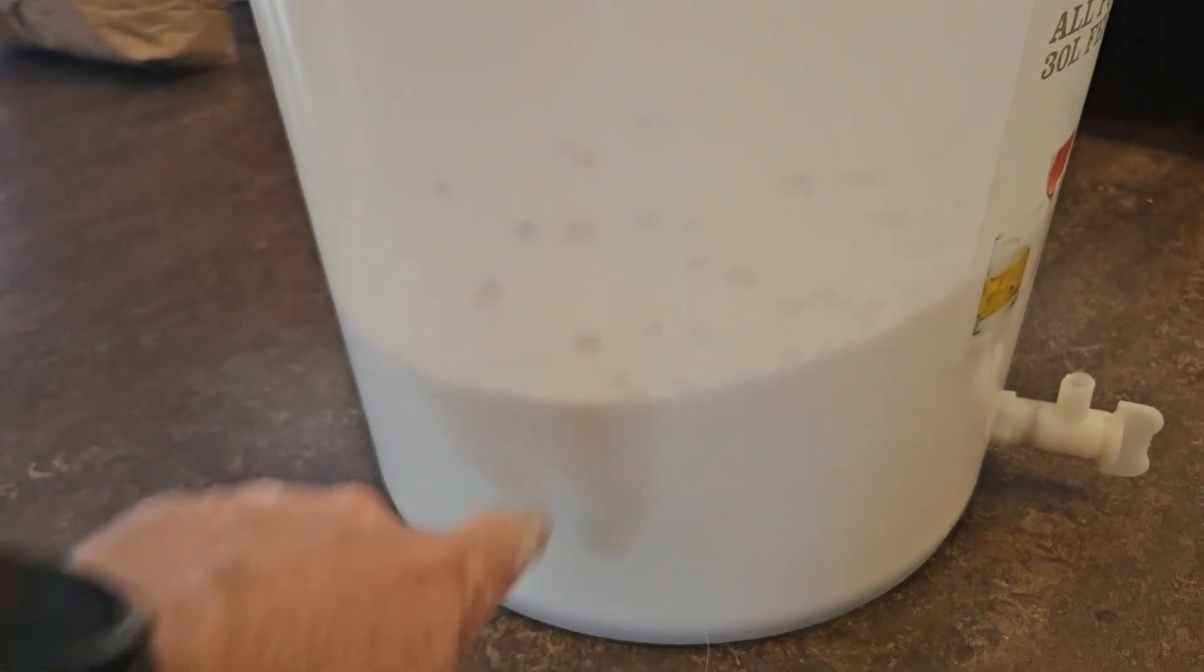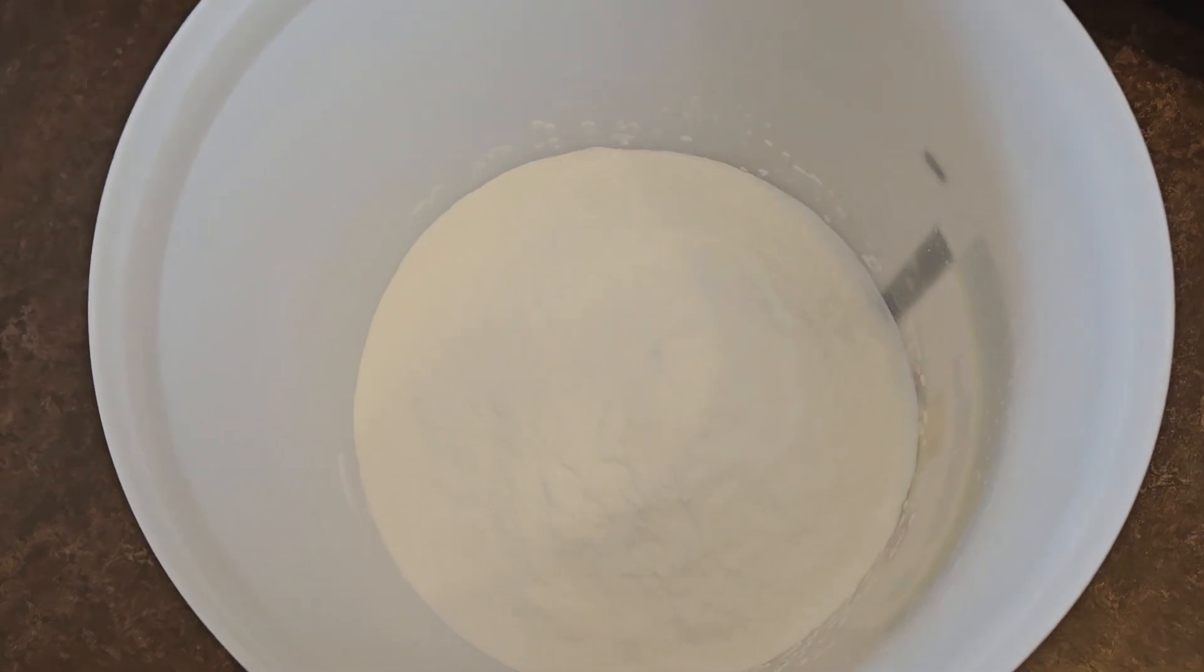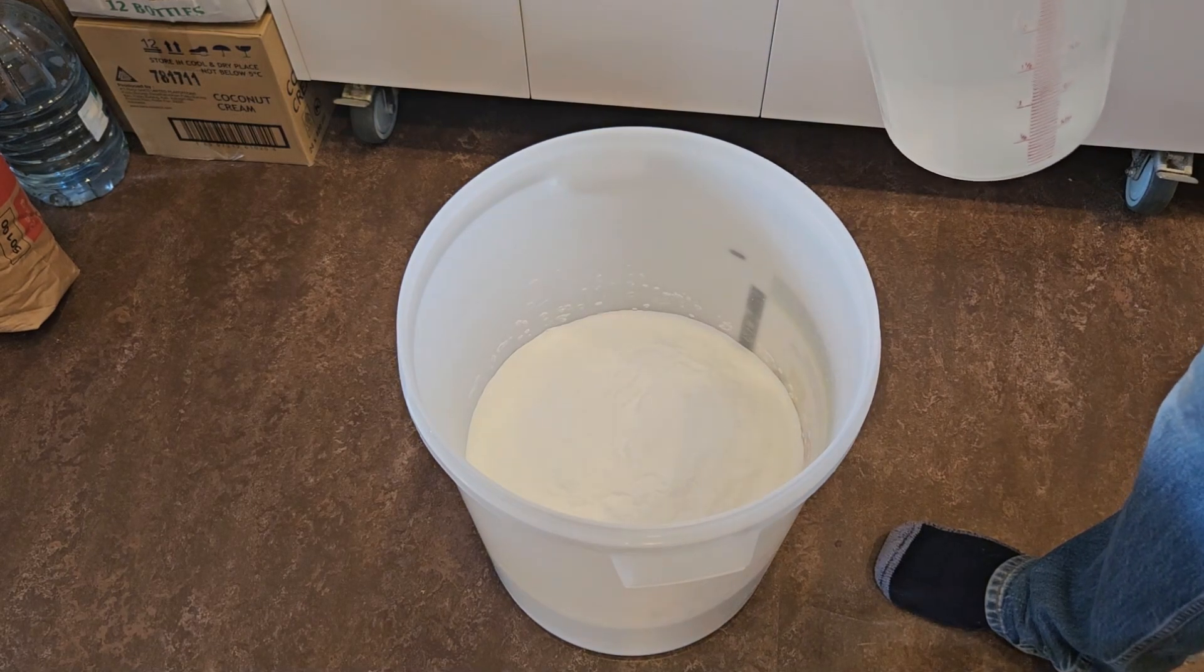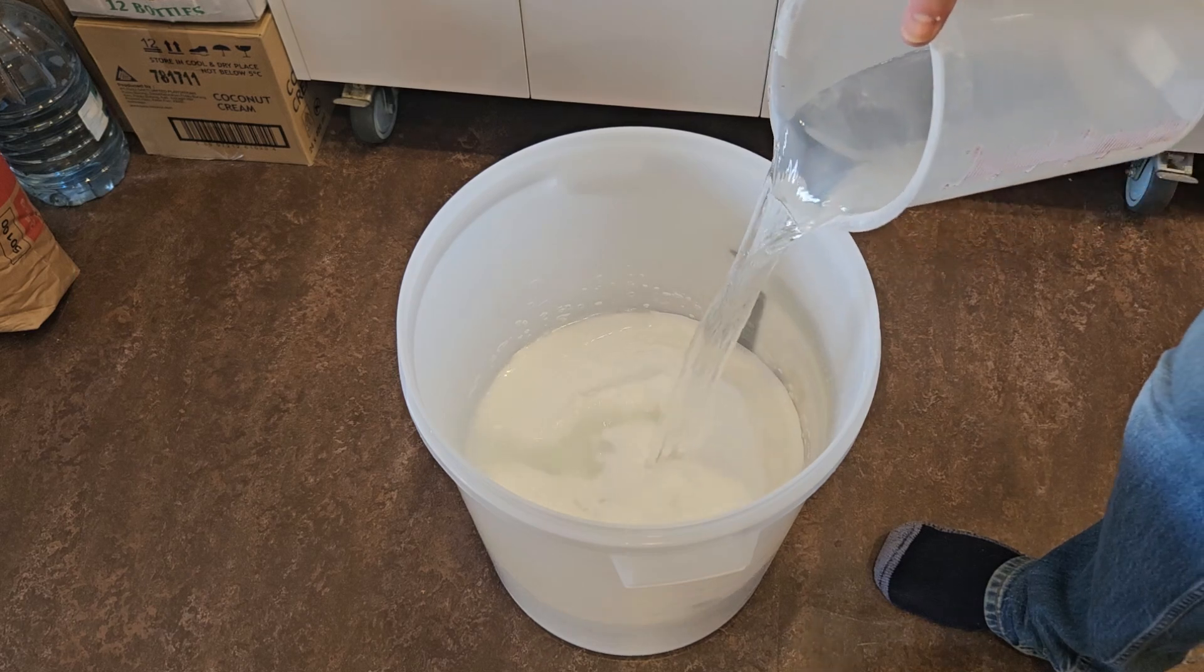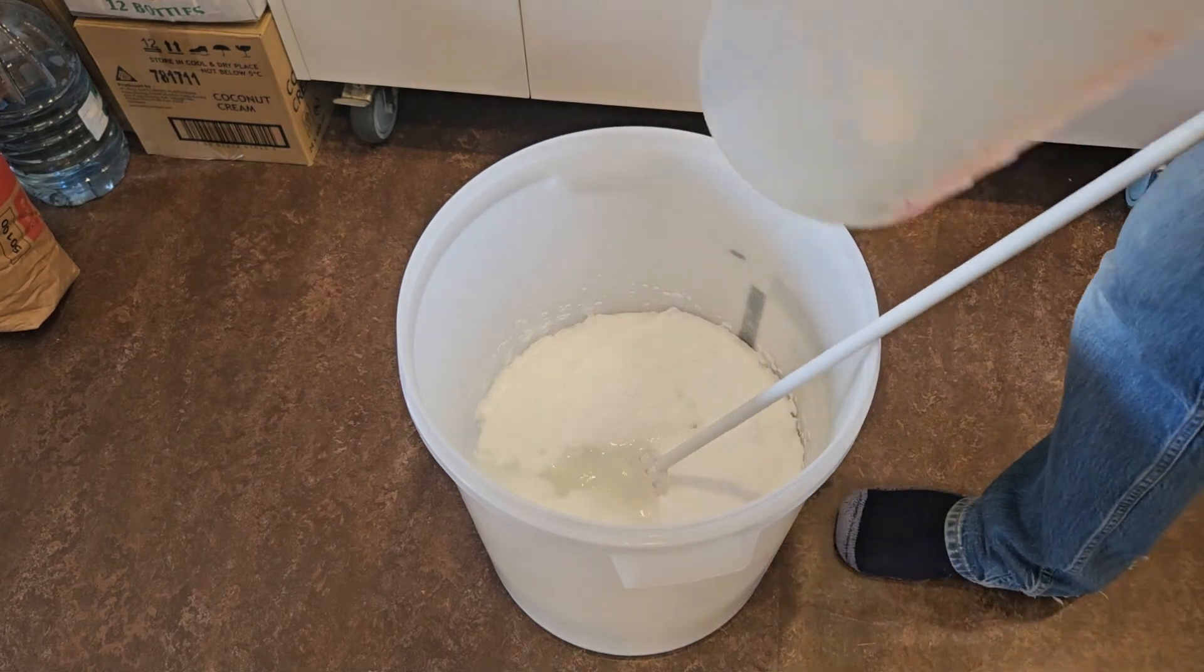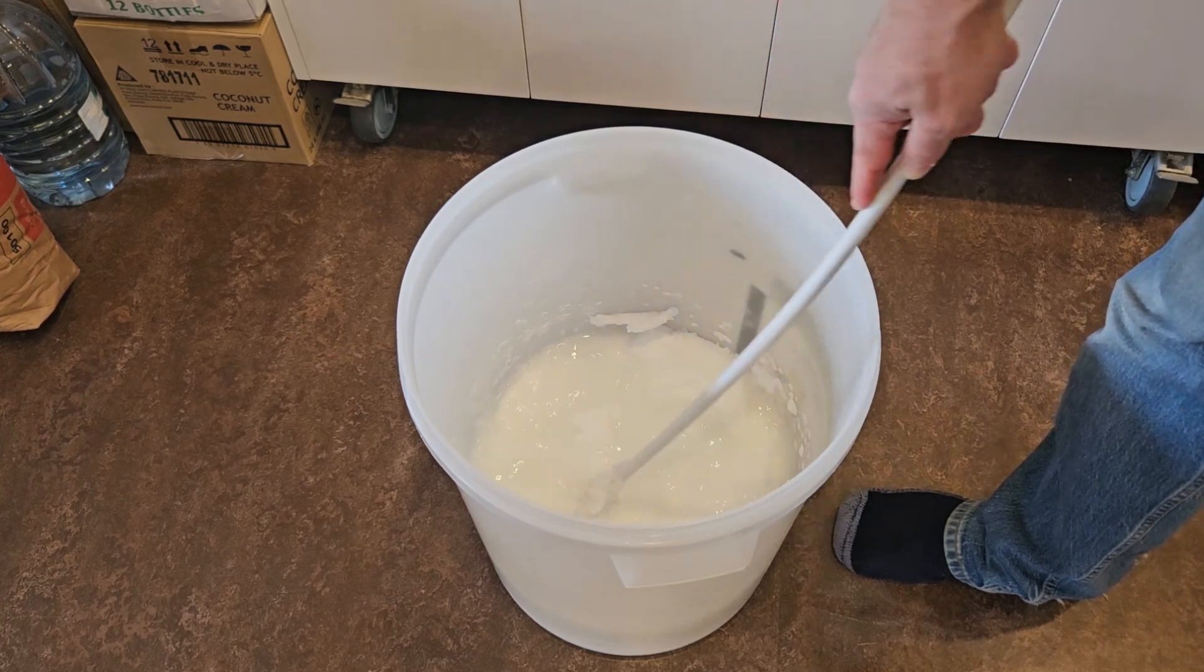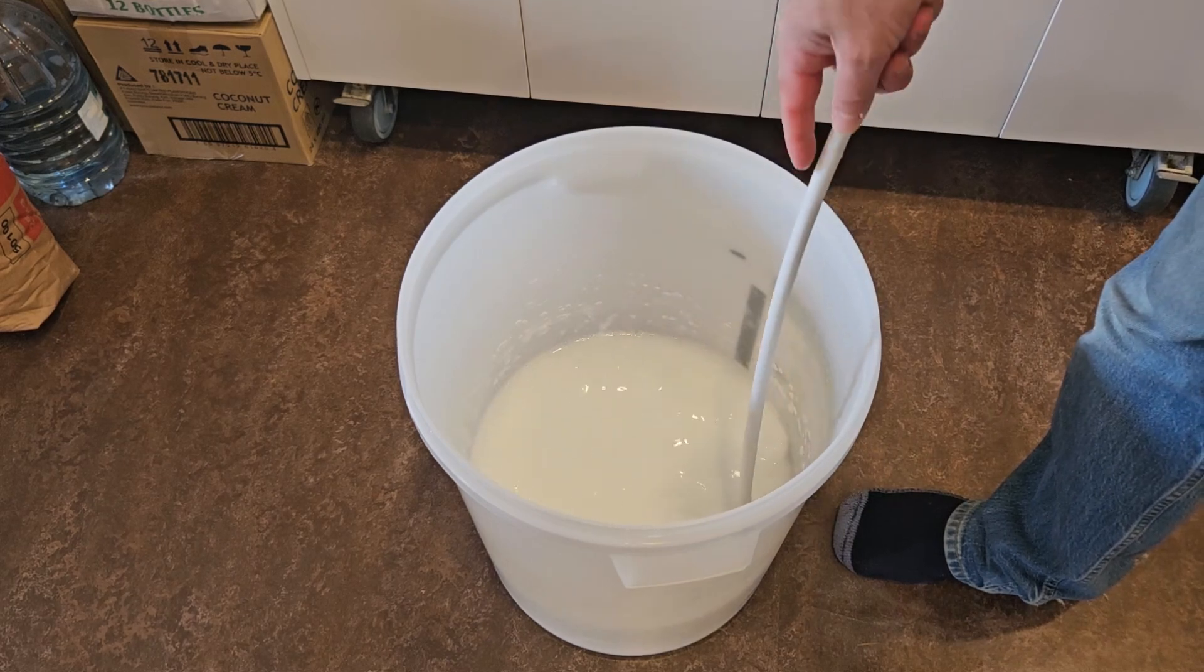As you can see there's quite a lot of sugar in there, and it's quite fine, very similar to caster sugar or icing sugar. To this sugar I'm going to add about 21 liters of water. I'm starting with hot water because it makes the sugar easier to dissolve. I'll give that a quick stir because this dextrose is very fine, it dissolves very easily.